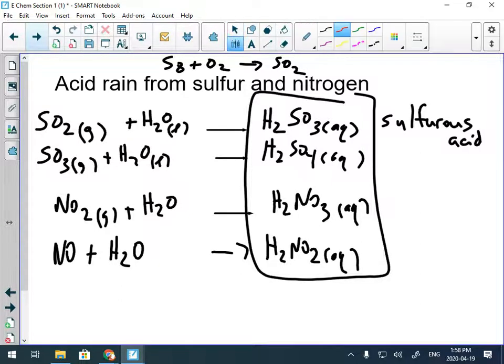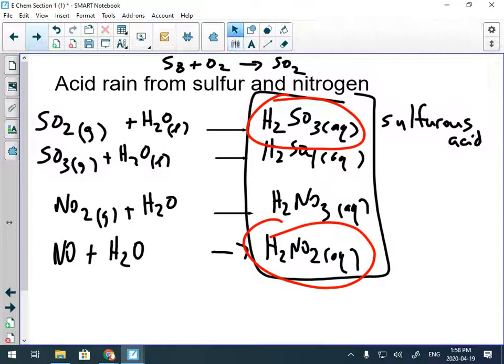Now the two most common types of acid rain are from sulfurous acid and nitrous acid because they're not as wicked strong as the other two. What's the problem with acid rain?